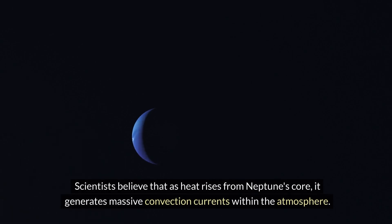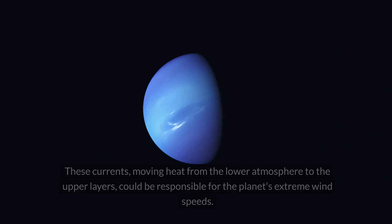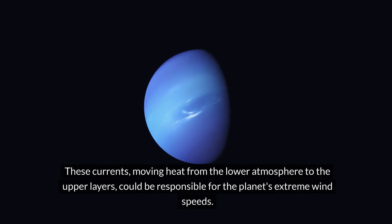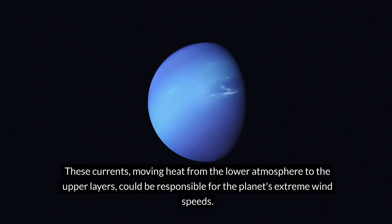Scientists believe that as heat rises from Neptune's core, it generates massive convection currents within the atmosphere. These currents, moving heat from the lower atmosphere to the upper layers, could be responsible for the planet's extreme wind speeds.